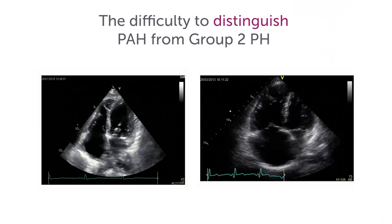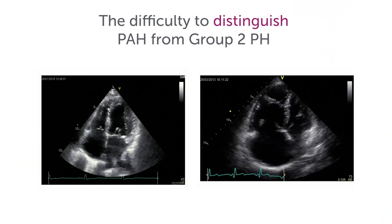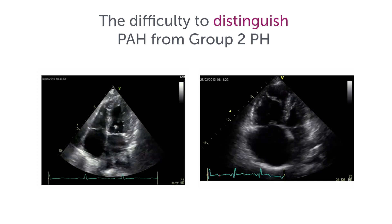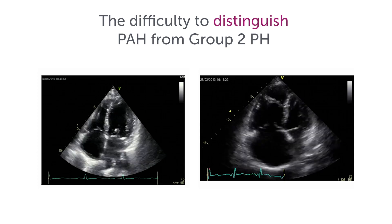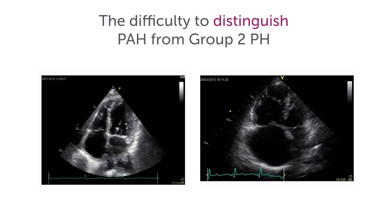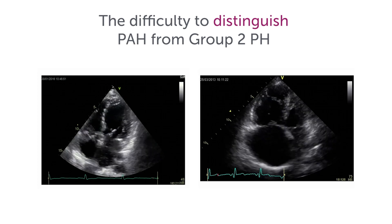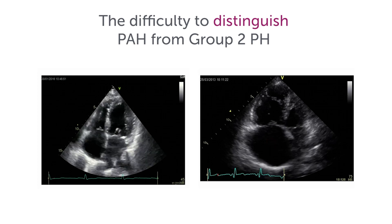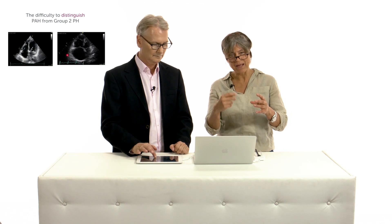This example illustrates two patients with very high pulmonary pressures. The one on the left has left heart disease with a big left atrium, while the one on the right has pulmonary arterial hypertension with a small left atrium. So the size of the left atrium points you in a direction — look at the left atrium for echocardiographic guidance on whether this might be pre- or post-capillary PH.